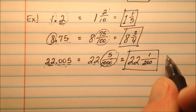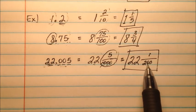So in my final example here, I have 22 and 1 over 200.